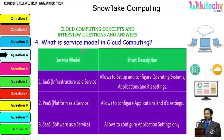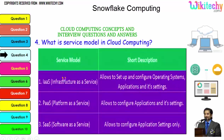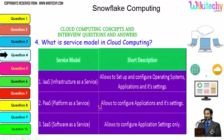Now the question is: what is the service model in cloud computing? The major service models are three. First, Infrastructure as a Service — allows you to set up and configure the operating system, application, and its settings. You are given a server; put whatever operating system and applications you want. Platform as a Service — you are allocated a specified operating system and can put any applications and settings. Software as a Service — you are given a software and can do whatever application settings you want.